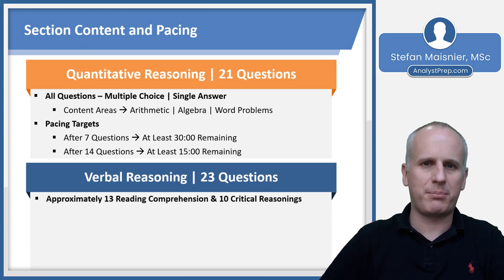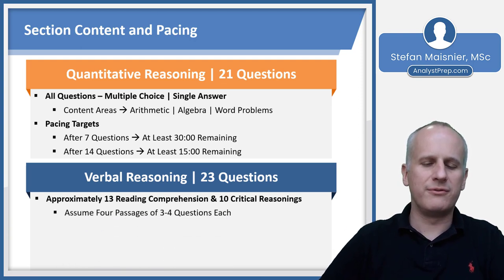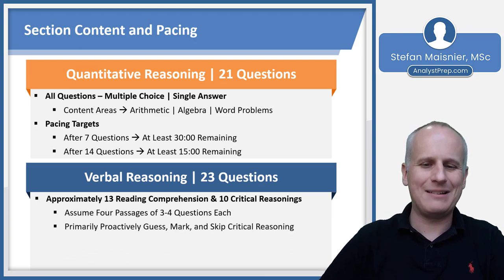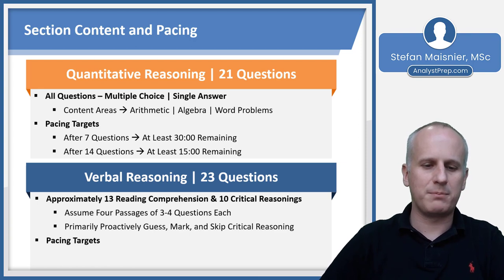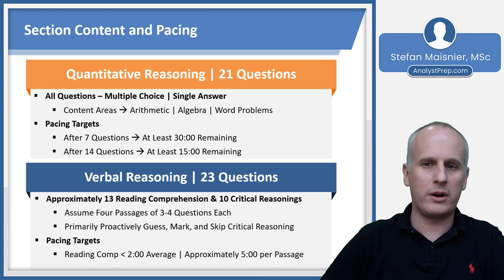The Verbal Reasoning section is going to be 23 questions: approximately 13 Reading Comprehension problems and 10 Critical Reasoning questions. Assume four passages of three to four questions each. You should only proactively guess, mark, and skip Critical Reasoning questions — not Reading Comprehension — because there are no more Sentence Corrections in Verbal Reasoning for the GMAT Focus Edition. Those Reading Comprehensions are incredibly important, and you can quickly end up missing three or four in a row if you're not careful. If you must go more quickly through anything, prioritize speed on Critical Reasoning to ensure you finish the section.